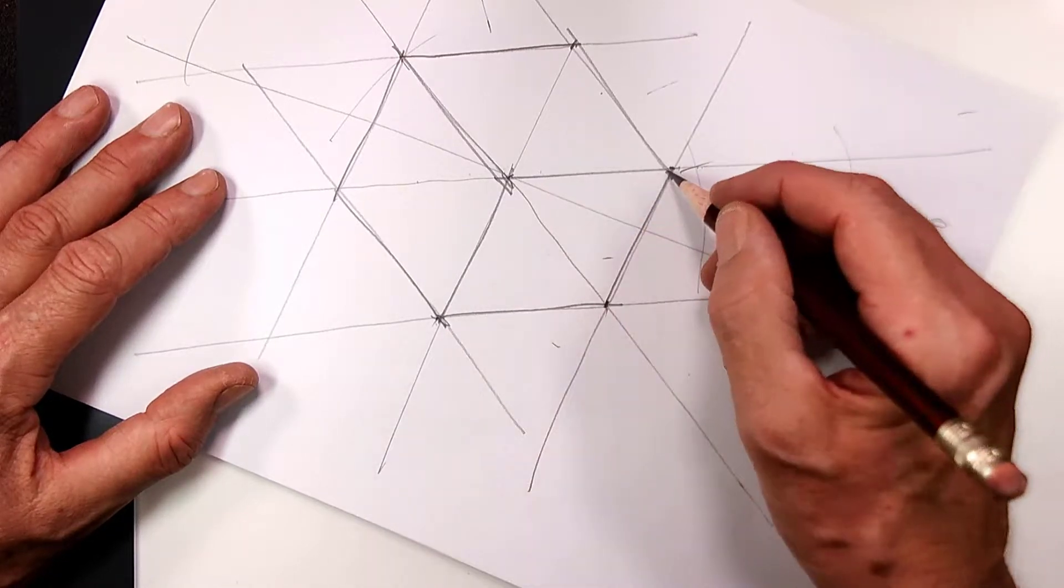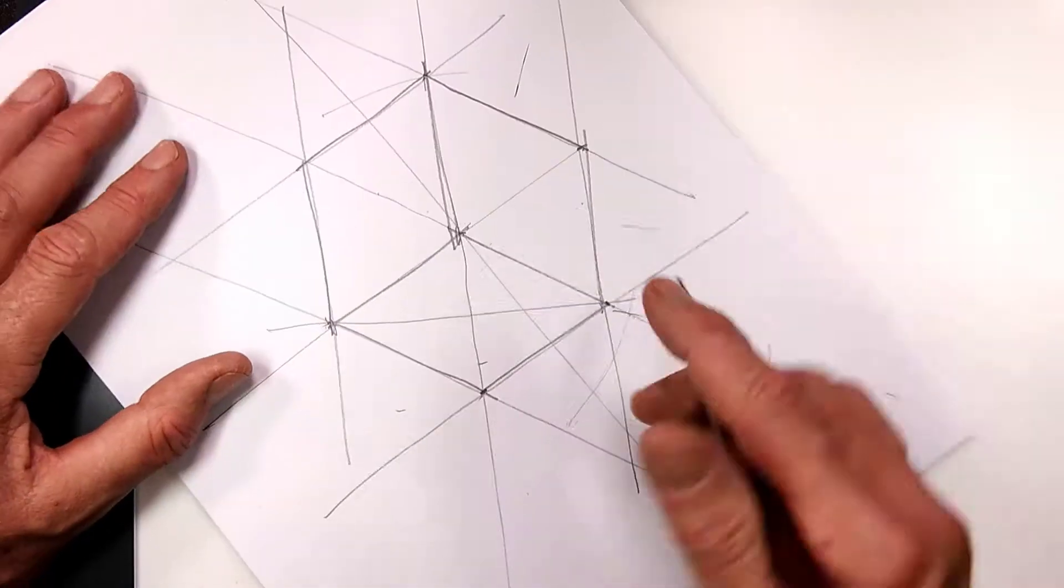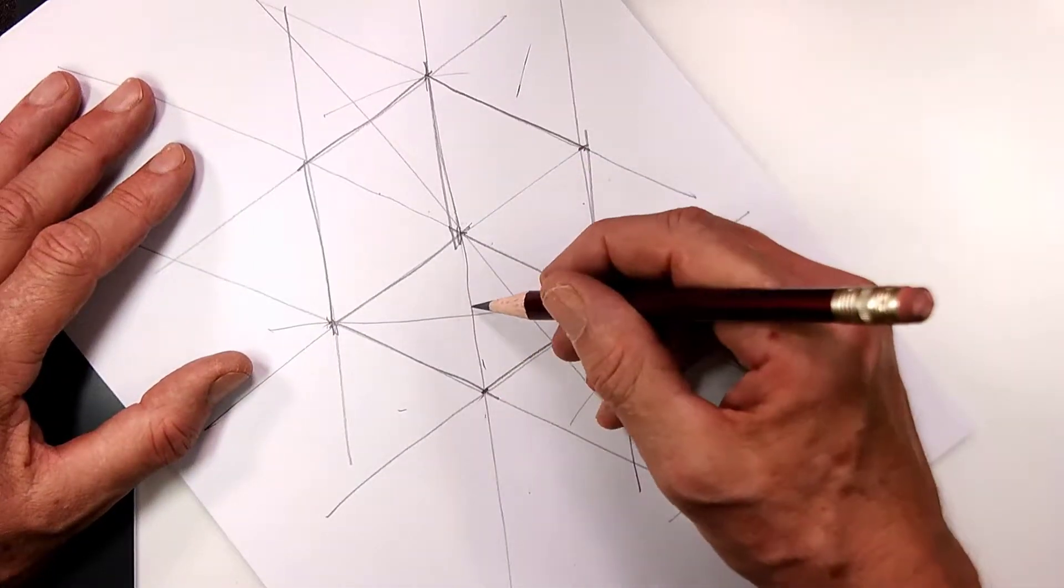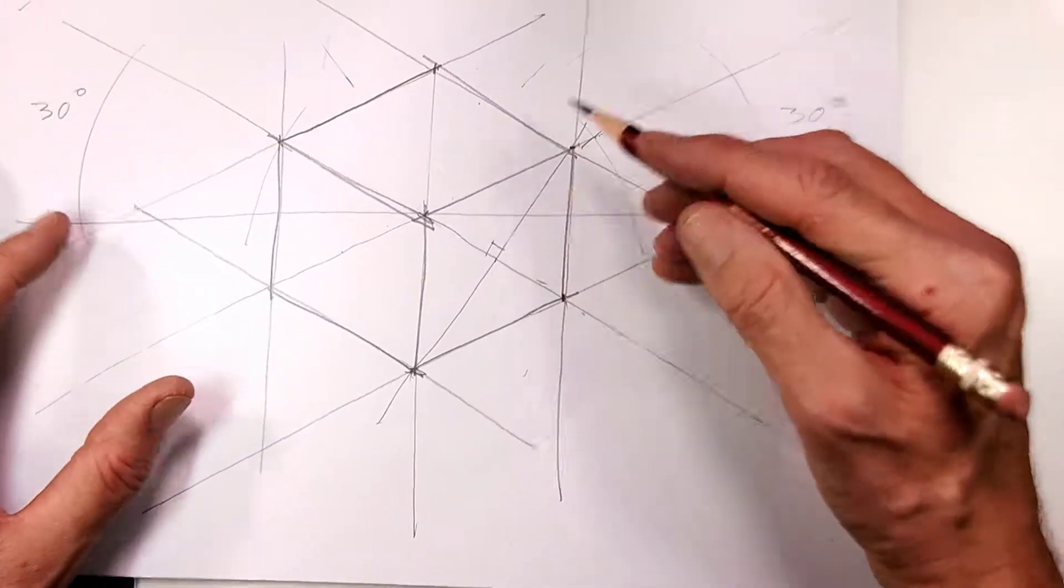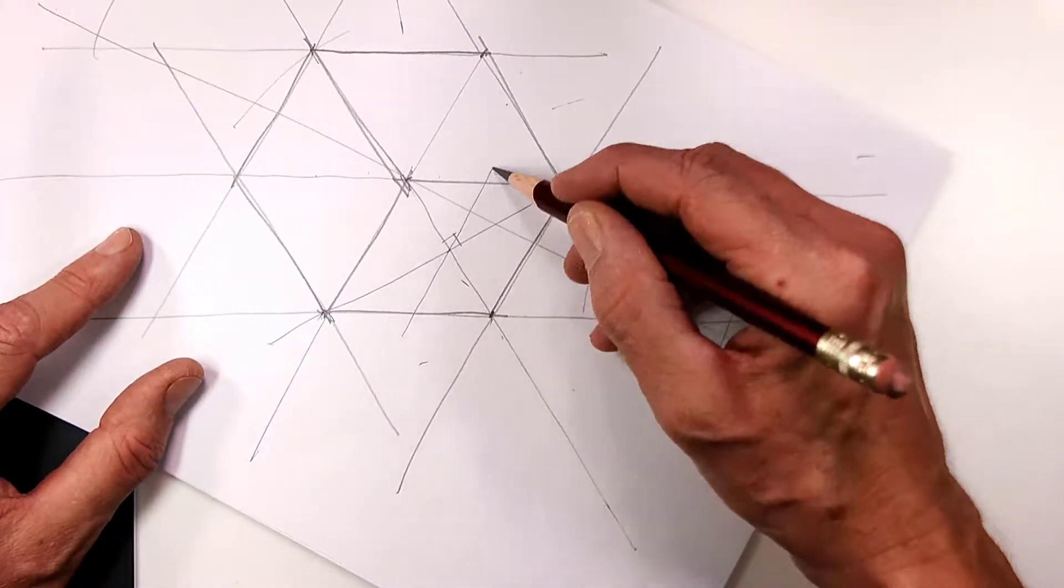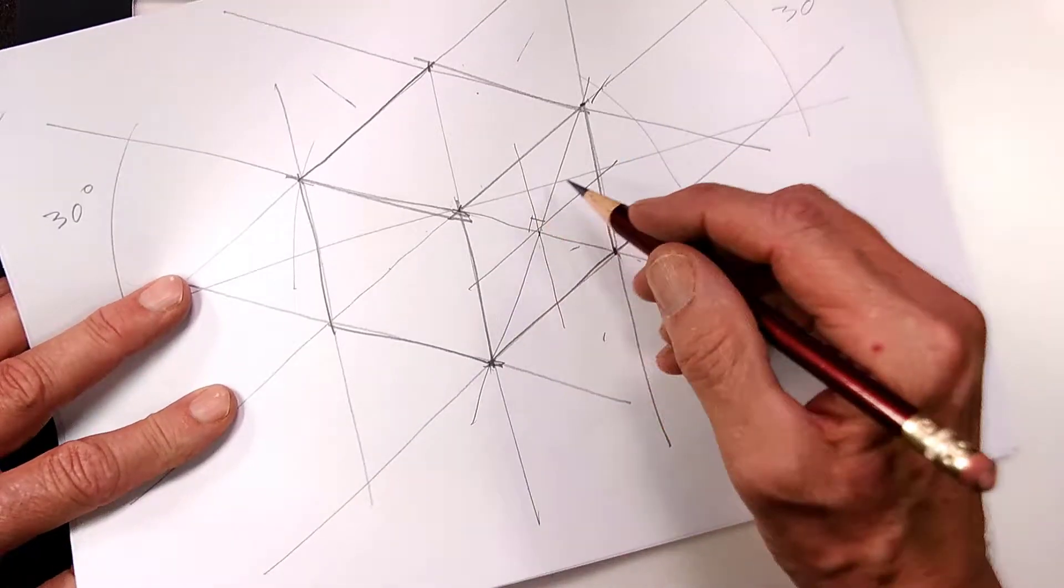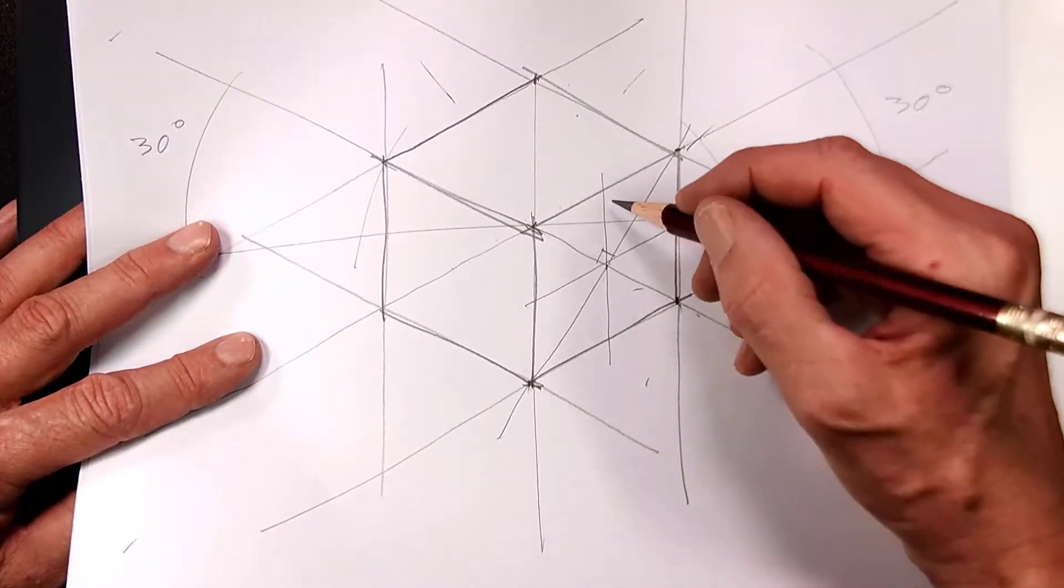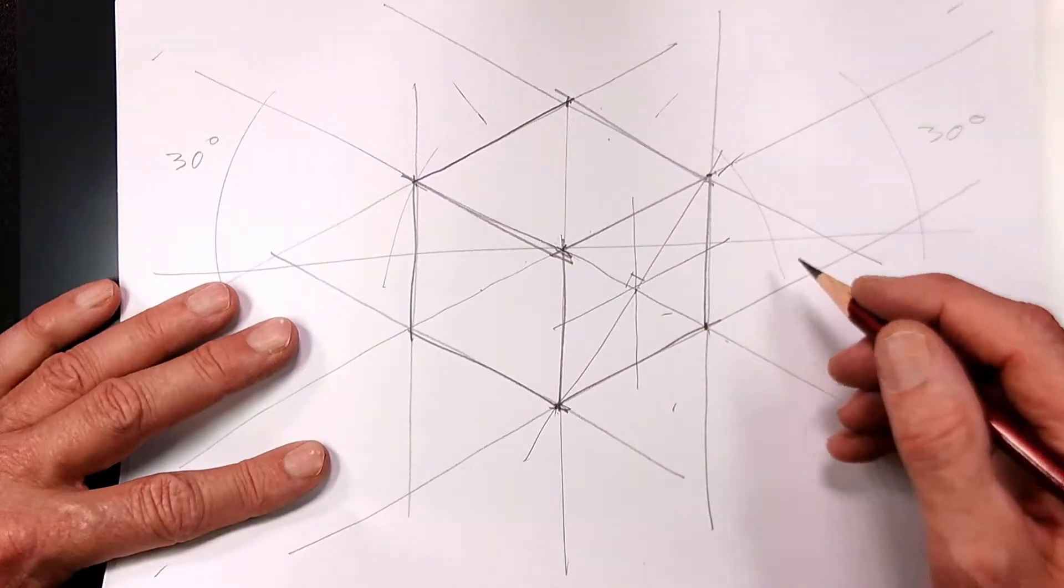So let's draw the long axis or major axis like this. This is the minor axis. Notice that these are perpendicular. Then at the center point, let's draw the lines vertical and this 30 degree line that are parallel to the axes.